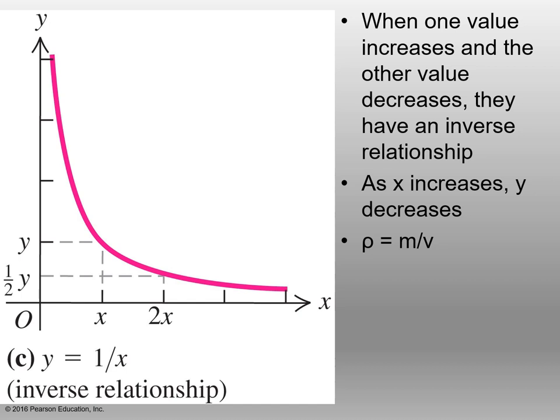An inverse relationship: when one value increases, the other value decreases. With a direct proportionality, when one value increases, the other increases. But with an inverse relationship, as one value increases, the other decreases. In physics, rho stands for density. As you studied in chemistry, density equals mass over volume. In physics, we use rho. As mass increases, volume decreases — that is an example of an inverse relationship.